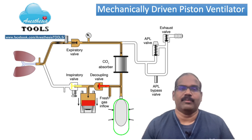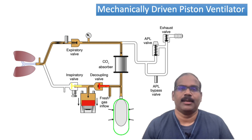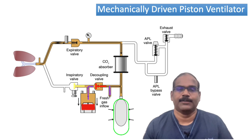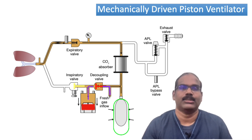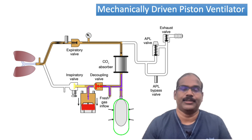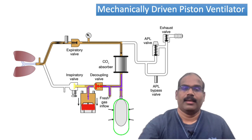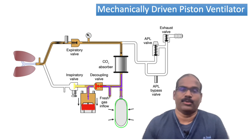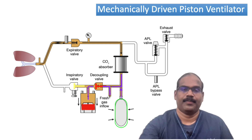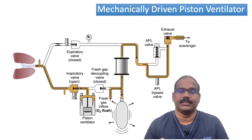During the initial phase of exhalation, before the piston begins moving back to its starting position, the decoupling valve opens. The inspiratory valve closes, the decoupling valve opens, and fresh gas can now flow into the driving chamber. The exhaled gas circuit also empties into the piston driver, and further the reservoir bag empties through the decoupling valve into the fresh gas inflow inside the piston. Thus, the reservoir bag actually shrinks during the exhalation phase.